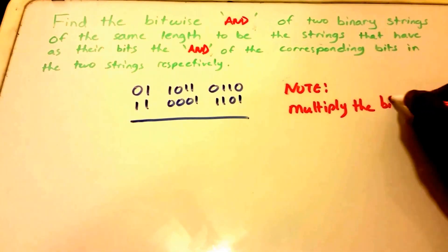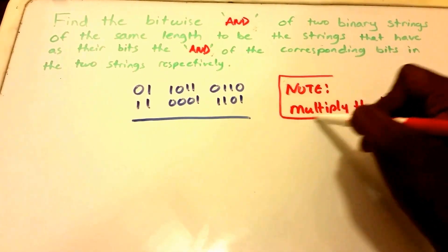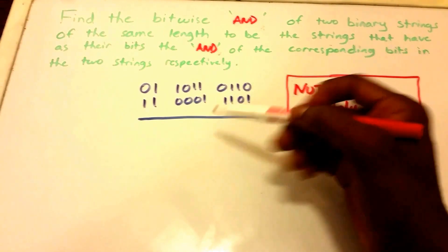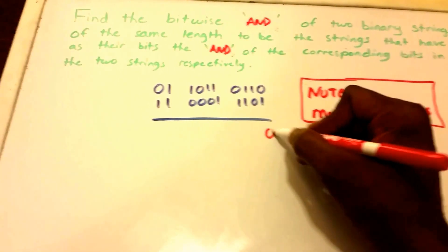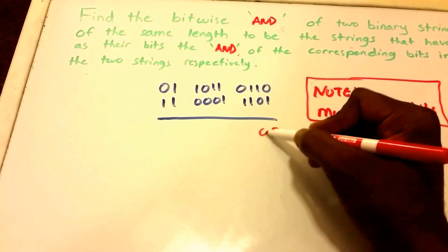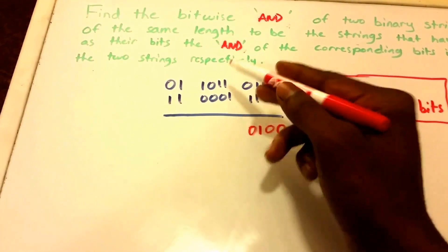Okay, let's go ahead and do that. We do 0 times 1, that gives us 0. 1 times 0, we get 0. 1 times 1, we get 1. 0 times 1, we get 0. 1 times 1, we get 1.